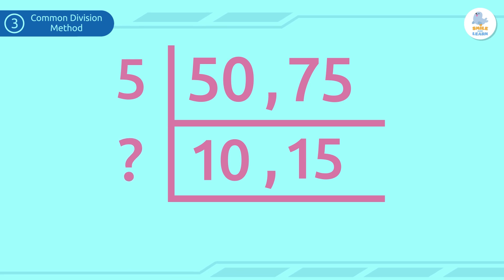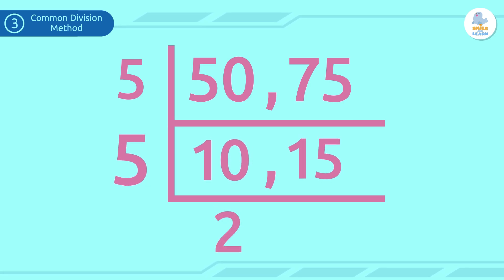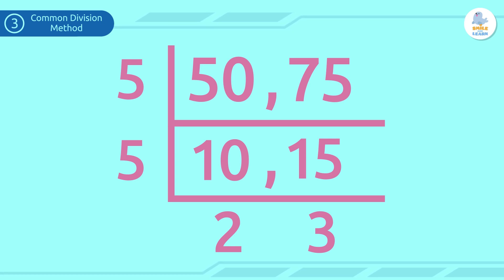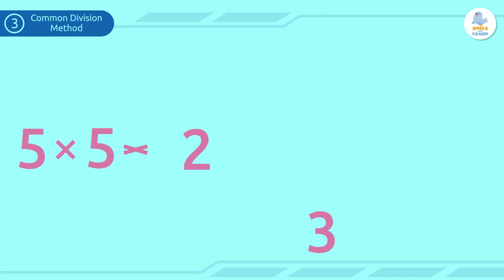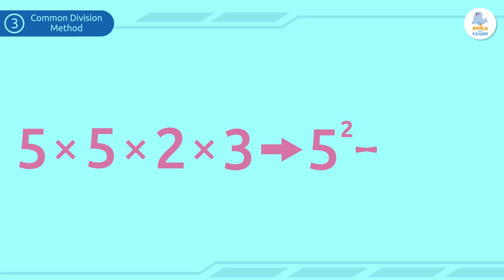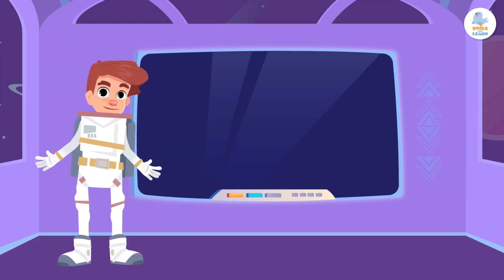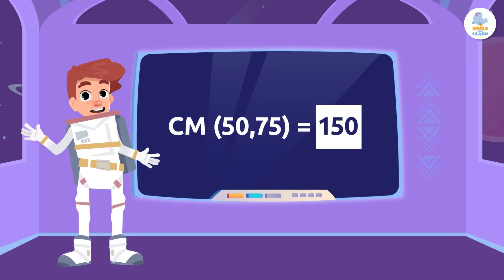What is the smallest prime number that goes into both 10 and 15? Five! We write 5 again to the left and divide: 10÷5=2 and 15÷5=3. Since 2 and 3 cannot be divided by a common prime number and are also prime numbers themselves, we stop. Now we calculate the LCM by multiplying 5×5×2×3, or 5²×2×3, which equals 150.